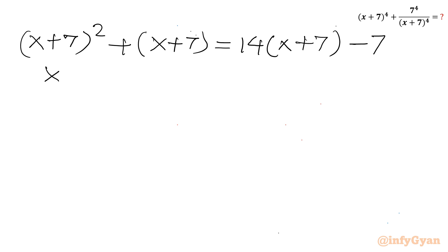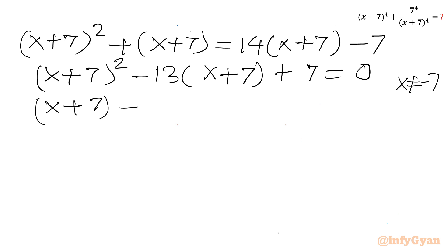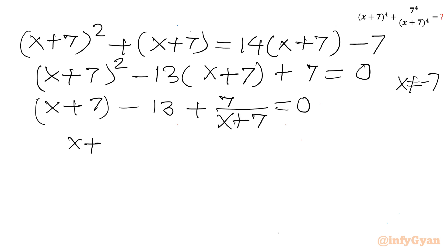Taking all terms to the LHS: (x+7)² + (1-14)(x+7) + 7 = 0, which gives (x+7)² - 13(x+7) + 7 = 0. Since x ≠ -7, we can divide by (x+7). This gives us x+7 - 13 + 7/(x+7) = 0, so our target expression x+7 + 7/(x+7) = 13.